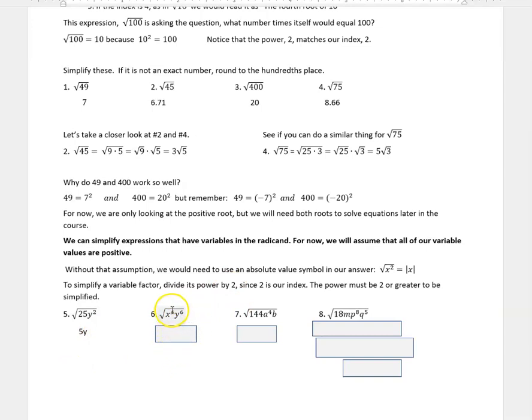And number 6, if we take this power of 4 and divide by 2, we're going to get 2. And if we take 6 and divide by 2, we're going to get 3. So the answer of this would be x squared y cubed. Again, we would have to do some absolute values on there if we didn't have that assumption in place. Take a look at number 7. Number 7 has a perfect square number 144 here, and it's got a power of 4. But this power is 1. Remember, it has to be a power of 2 or greater to be simplified. So when I simplify that, that b cannot be simplified. It's going to be stuck under that radical. But the square root of 144 is 12, and 4 divided by 2 is 2. So we get 12a squared times the square root of b.